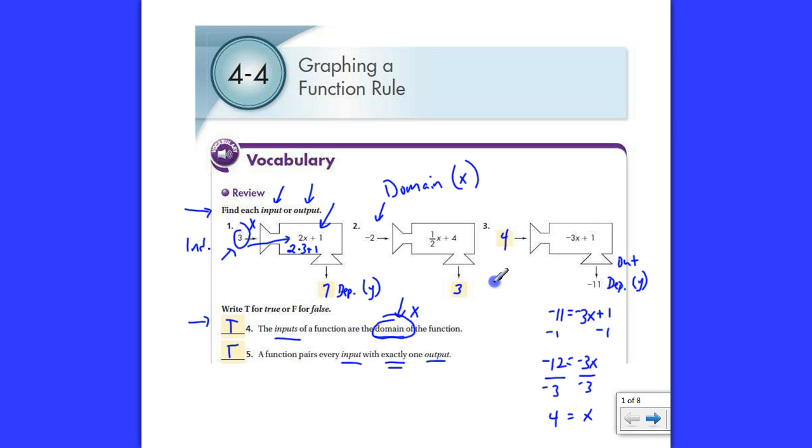In other words, if I use this one, if I input 4, I have to get that every time. You can't input 4 one time and then input 4 and get something else a second time. That's what they're trying to tell you here. Every input has to have exactly one output.